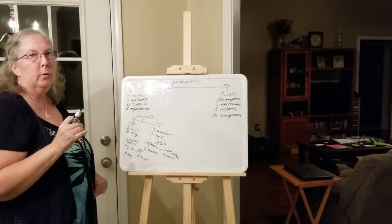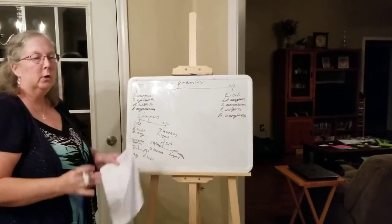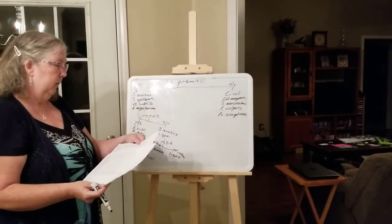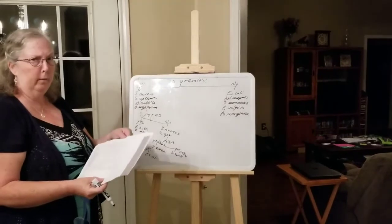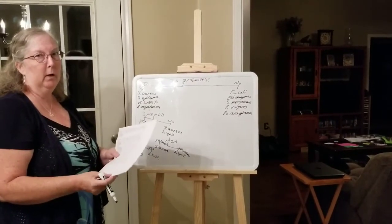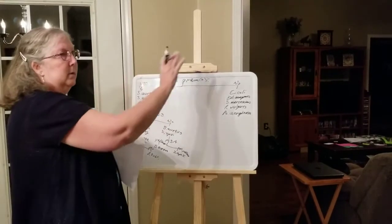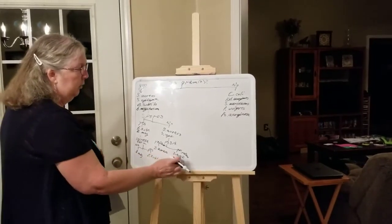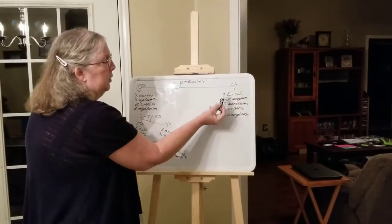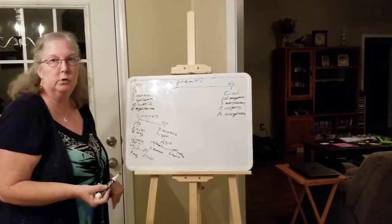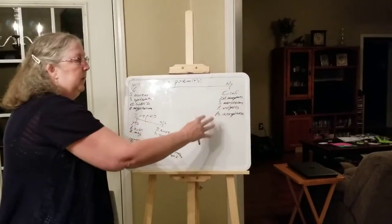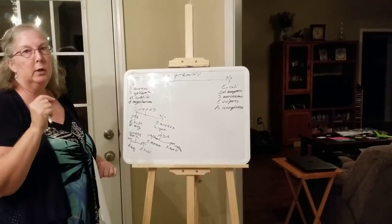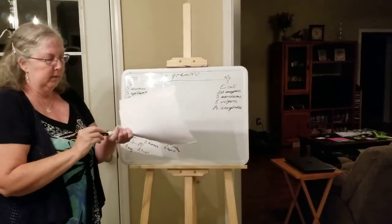For setting up your dichotomous key, you need to use these tables. All of the organisms on here need to be included — how would you separate them out? First, separate your gram-positives from your gram-negatives. At the end, I need to see that you can determine, for example, how to tell E. coli from Pseudomonas aeruginosa. You've got to be able to do your flowchart — that's the dichotomous key — to separate each individual bacterium out.